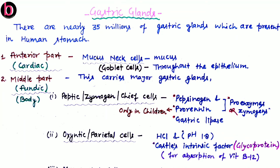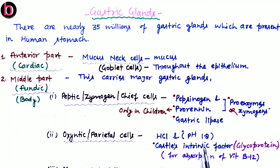The second cell type in the middle part is oxyntic or parietal cells, which secrete hydrochloric acid, also called gastric acid. Its pH is 1.8, making it strongly acidic. Along with HCl, there is also secretion of Castle's intrinsic factor, which is a type of glycoprotein helpful for absorption of vitamin B12 along with calcium ions.